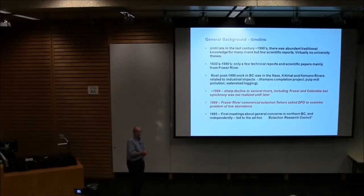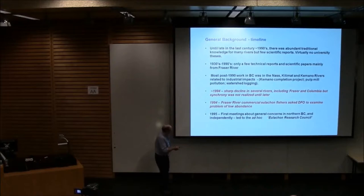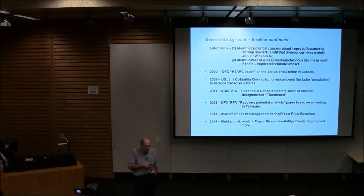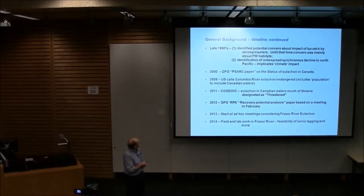In about 1994, there was a very sharp decline in hooligans. It happened in the Fraser. The commercial fishermen on the Fraser called DFO saying, what's going on with the hooligans? At the same time, hooligans crashed in the Columbia River and several other rivers. But nobody realized at the time that there was something going on among them. Joe Bauer is here, he will attest to that. That's when they brought us in, 1995. We had some of the first meetings, and there were a number of things happening in the mid-1990s.